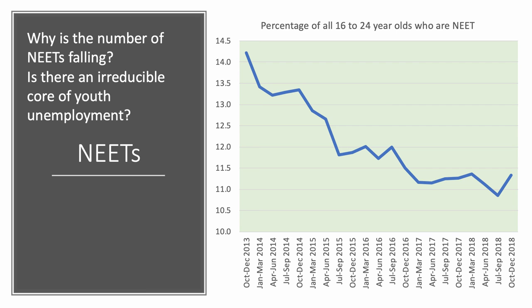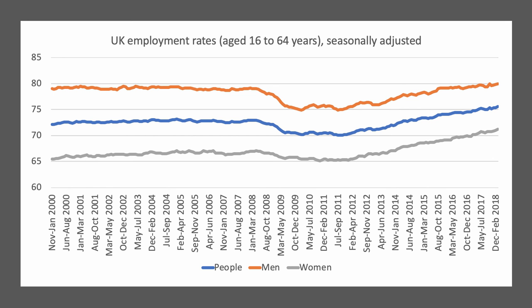The employment rate — the percentage of people of working age who have a job, be it full-time or part-time — has been rising, as you can see from this chart. Follow the blue line — the aggregate figure for the UK — it's now at a record high. More than 80% of men of working age are employed. There's also been a steep increase in female employment — now well above 70% of women of working age have some kind of job. Reasons include the growth of part-time employment, self-employment, and the rise of the gig economy.